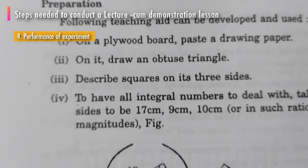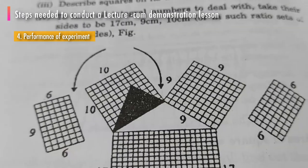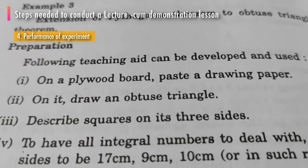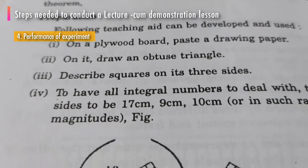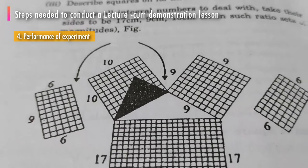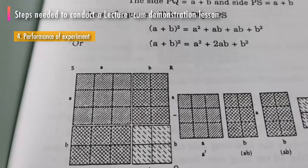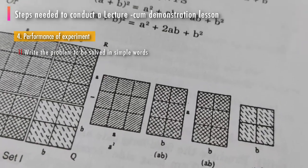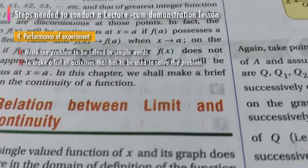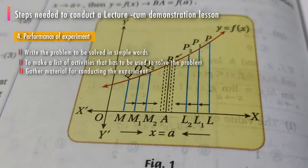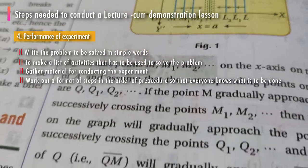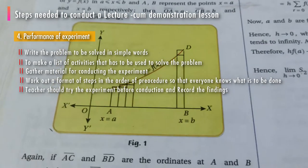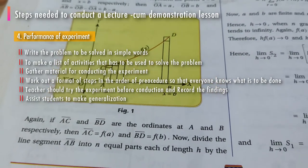The fourth step is performance of the experiment. A good observer is a person who has learned the use of senses — touch, sight, and smell — in an intelligent way. Through this method, children are encouraged to observe what happens in an experiment and state it carefully, and to make generalizations without violating scientific spirit. The following steps are generally accepted as valuable: write the problem in simple words, list activities needed, gather materials, work out a format of steps in order, conduct the experiment, record findings, and assist students in making generalizations.